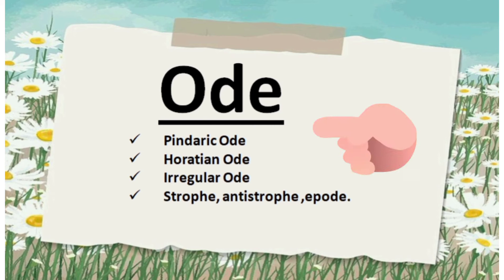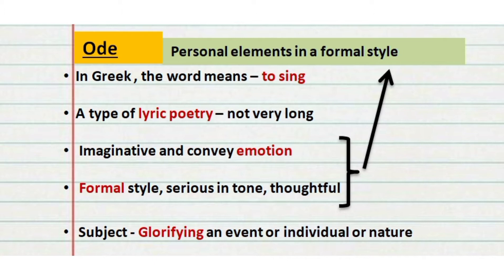In this video we are going to discuss about odes, its types, and its different parts. The term 'ode' is derived from the Greek language, which means 'to sing.' Basically, an ode is simply a lyrical poem, but it is not that long. There are two important features: first, there will always be an intense emotion conveyed through an ode with imaginative language; and second, the whole structure has a formal style and seriousness in tone. In short, an ode shows personal elements in a formal style.